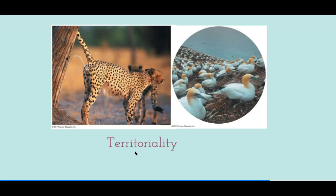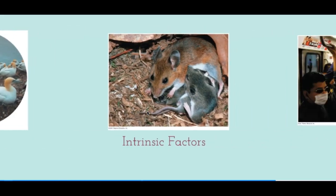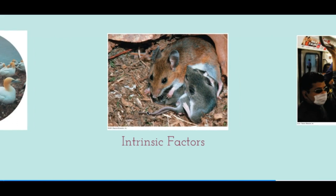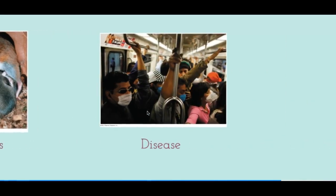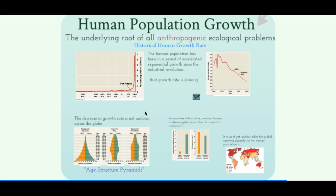Territoriality also keeps population levels down — a cheetah marking its territory keeps organisms apart and competition can reduce population levels. Intrinsic factors also play a role: in white-footed mice, as population density gets very high, reproductive rate drops due to aggressive interactions and hormone changes that delay sexual maturation and depress the immune system. Finally, disease is density-dependent: when population density is very high, disease spreads more easily, which then keeps the population level down.